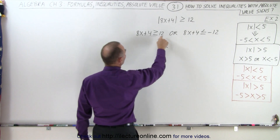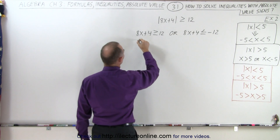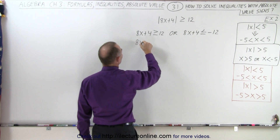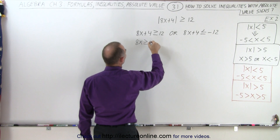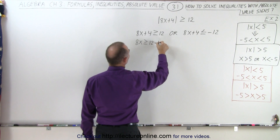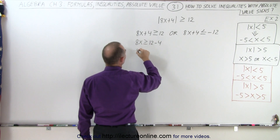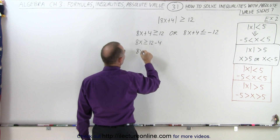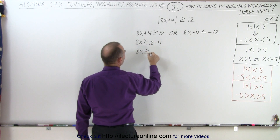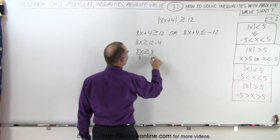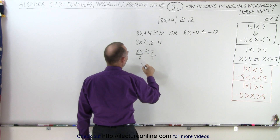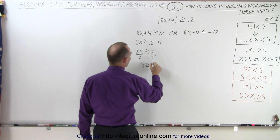First, we'll bring the 4 across. So we have 8x greater than or equal to 12 minus 4, which gives us 8x greater than or equal to 8. Divide both sides by positive 8, and we have x is greater than or equal to 1.